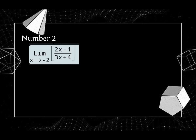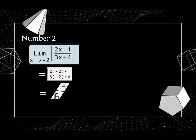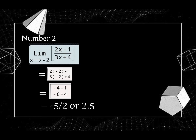Number 2: the limit of (2x minus 1) divided by (3x plus 4) as x approaches negative 2. First, we're going to substitute the value of x, which is negative 2, to get: 2 times negative 2 minus 1, divided by 3 times negative 2 plus 4. So the answer will be 2.5.